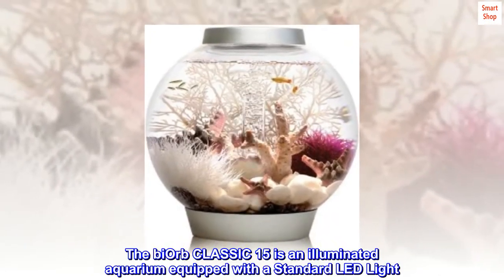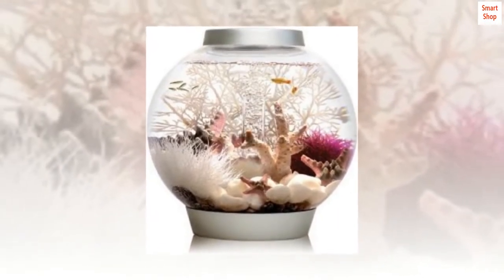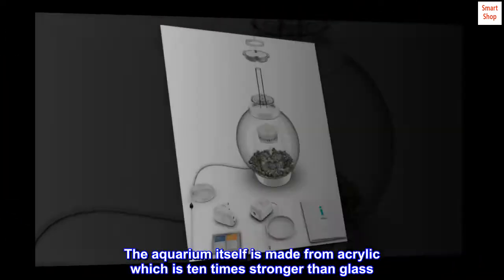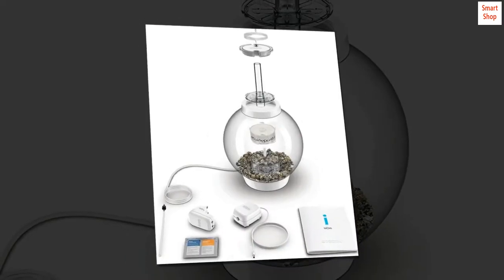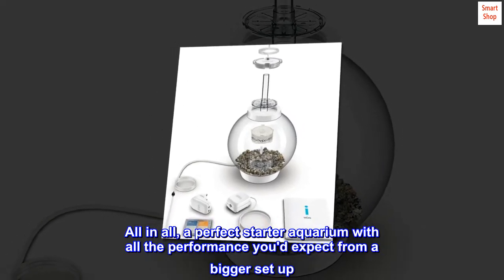The bi-orb Classic 15 is an illuminated aquarium equipped with a standard LED light. For your peace of mind, the aquarium itself is made from acrylic which is 10 times stronger than glass. All in all, a perfect starter aquarium with all the performance you'd expect from a bigger setup.